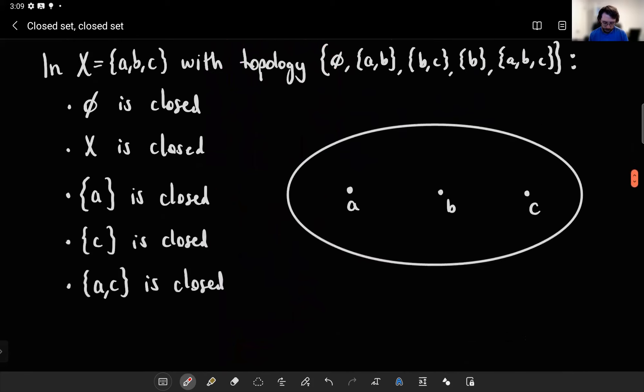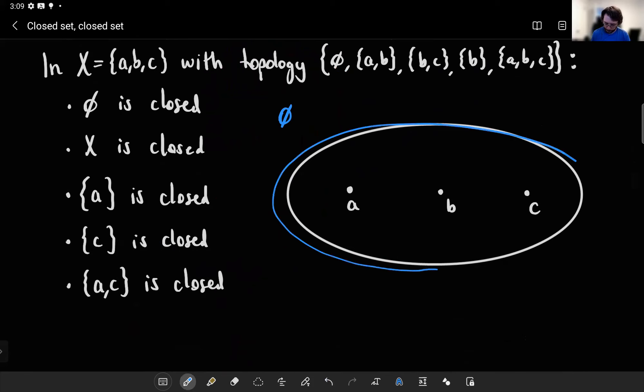And we could do our weird space where we're just taking three points and defining our topology like so. So the empty set is open, the whole space is open, the set containing A and B is open, B and C, and the singleton B. Those are my only open sets. So I've drawn the five of them in blue.